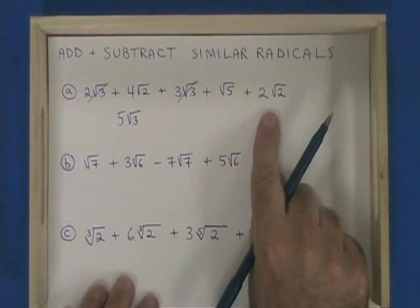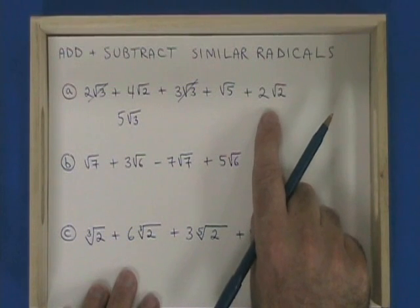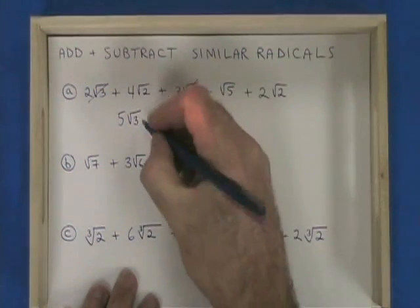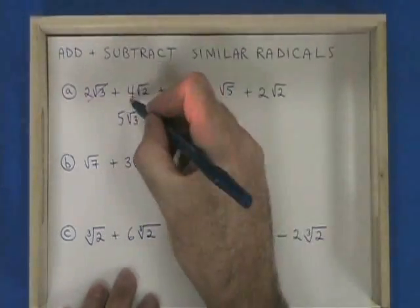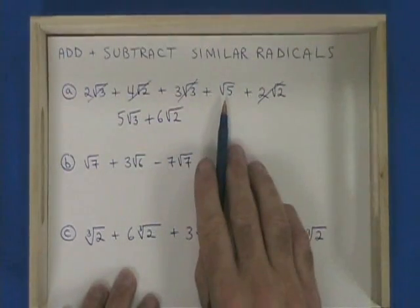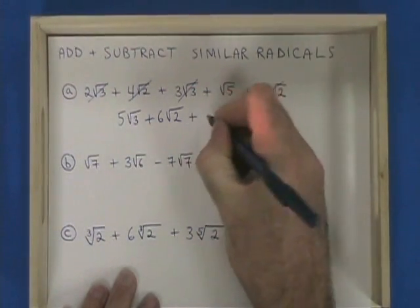4√2 and 2√2 are the only terms with √2. They're similar. 4√2 plus 2√2 is 6√2. The only term left is √5, which isn't similar to anything else, so it's carried down to the answer.